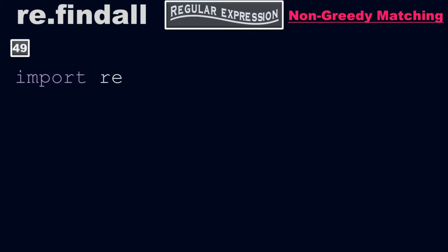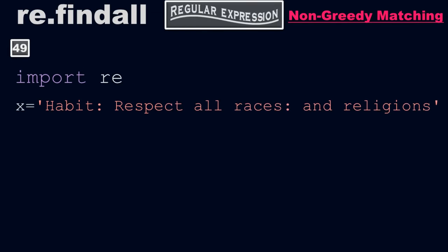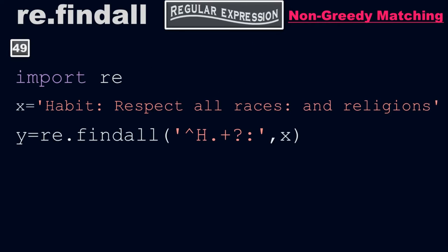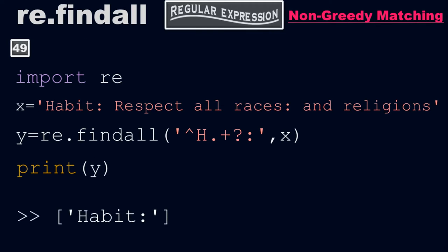As usual, import the regular expression library. Where x equals 'habit, colons, respect all races and religions.' Where y equals re.findall of caret dot-plus colon, x. Print y — it will return this output. We have only 'habit with colon' in the output.